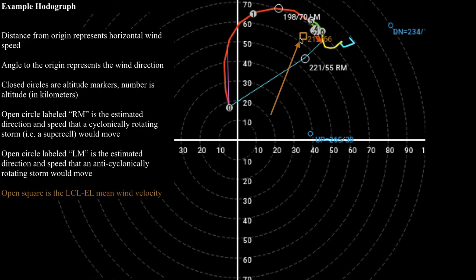This square, colored in a brownish-tan color, represents the mean velocity between the cloud layer and the top of the troposphere, or the equilibrium level. This usually tells you what direction an ordinary single-cell thunderstorm would want to move, using the same convention as the right mover and left mover — just connect the center of this point to the origin. In this case, an ordinary thunderstorm would want to move at a speed of about 66 knots, roughly 80 miles per hour, in a sort of north-northeasterly direction.